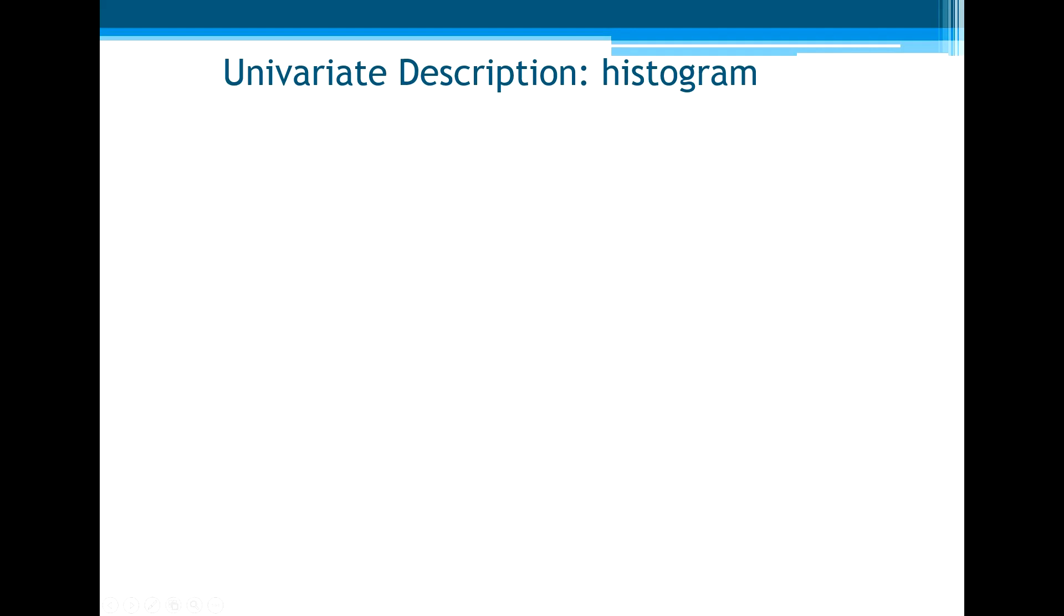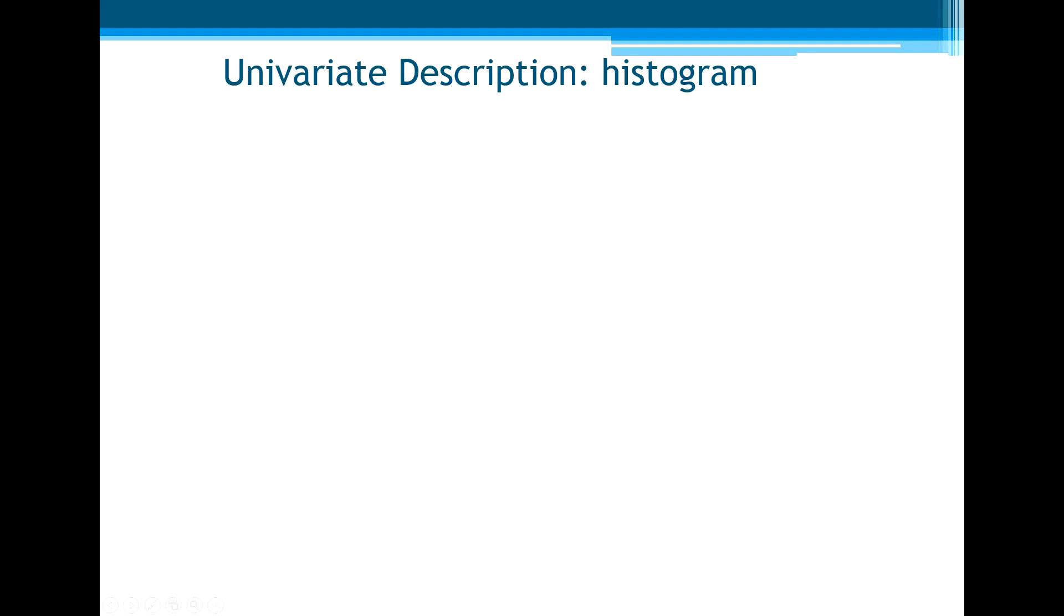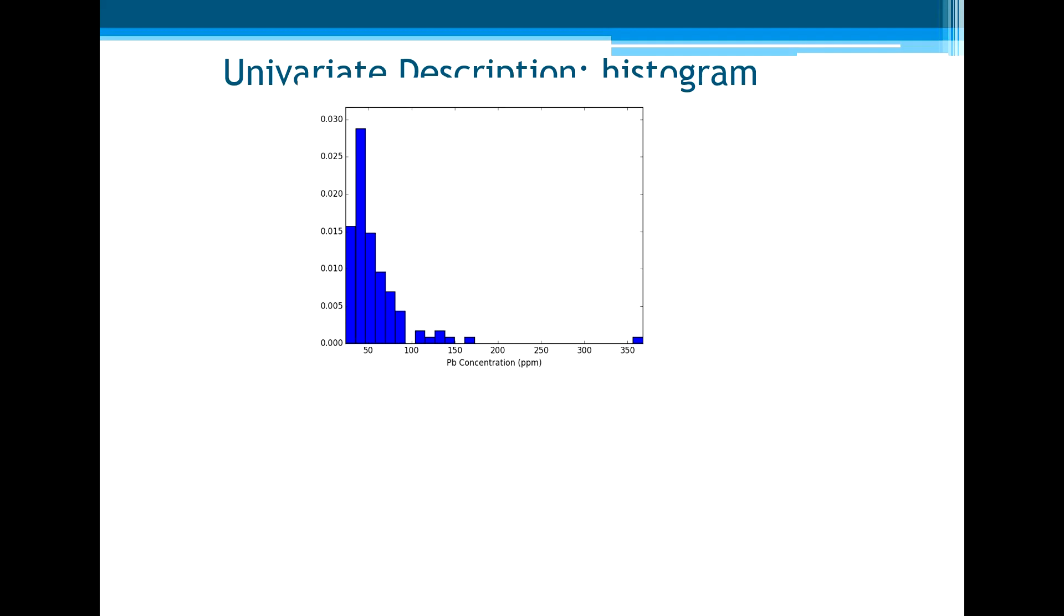We took the properties and we built the histogram of porosity, also the histogram of Pb, or contaminant concentration. But now we want to summarize them in measures of center, measures of location, and measures of spread.